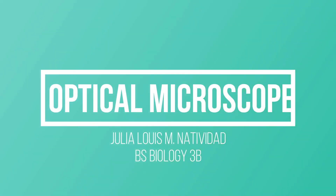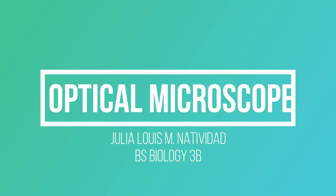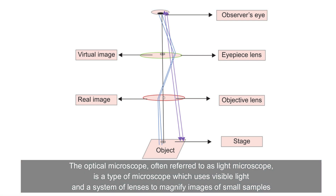Hi everyone, it's Julia and our topic for today is Optical Microscope. The optical microscope, often referred to as light microscope, is a type of microscope which uses visible light and a system of lenses to magnify images of small samples.